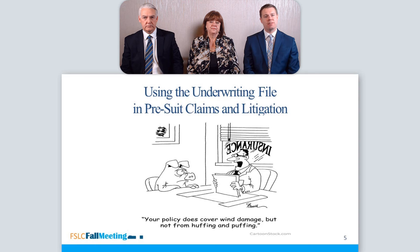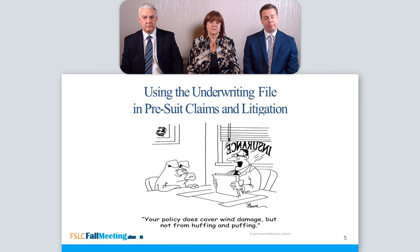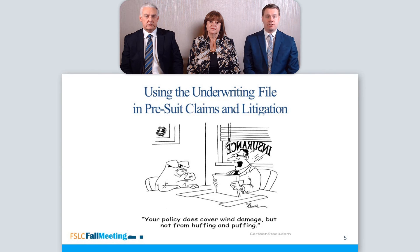In the context of litigation, opposing parties routinely seek the production of the underwriting file during discovery, and routinely insurers will object to those requests on several grounds, one of which is relevancy. Courts throughout the country find that the underwriting file is discoverable when one of the issues concerns ambiguous policy terms or claims of bad faith. However, other courts have found that in the absence of those claims or allegations, an underwriting file may be irrelevant and not discoverable.